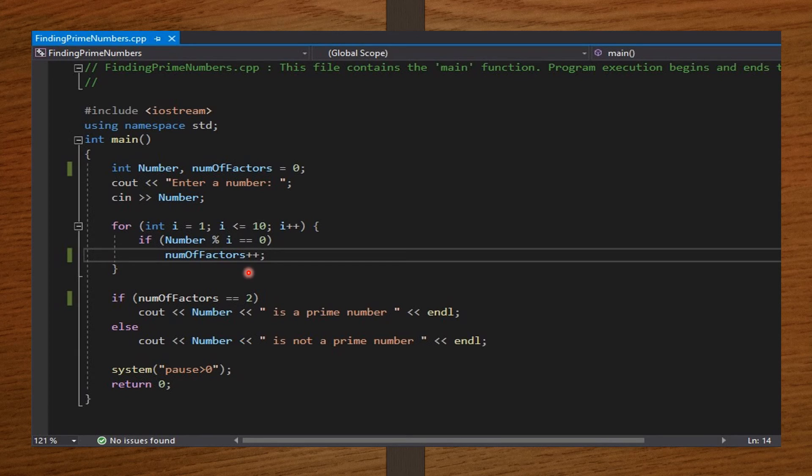So in the int main function, I declare number and numOfFactors to be integers. And I initialize numOfFactors to be zero. Then I ask the user to input a number. So I say enter a number, cout enter a number and then cin number. So I set the for loop which is going to count the number of factors for the particular number the user is going to input.